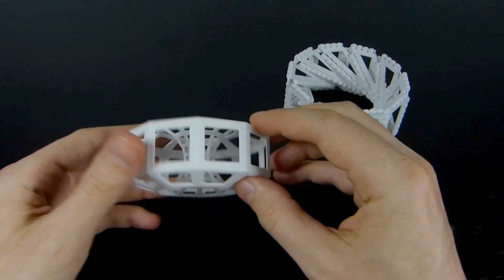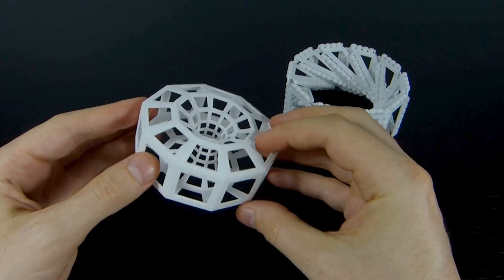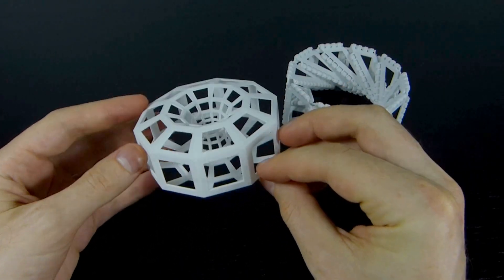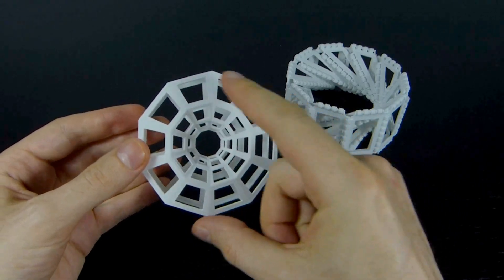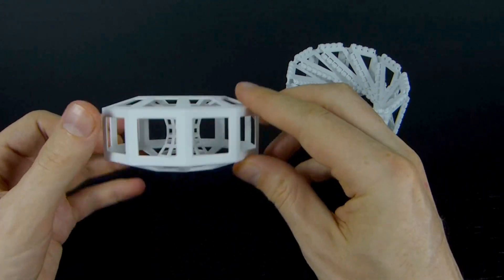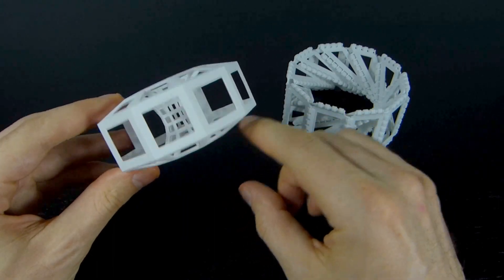This torus has a tiling on it with squares. If you count, there's 10 squares around this way, and there's also 10 squares if you go around this way.